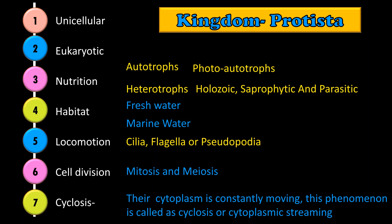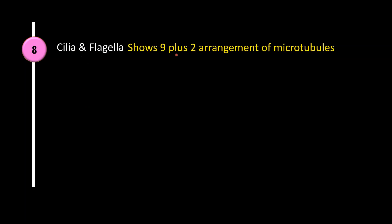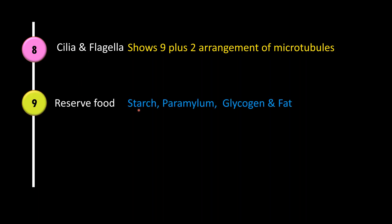Cyclosis helps in circulation of material inside the single cell. Flagella and cilia show a 9+2 arrangement of microtubules, that is 11 microtubules in total. They show reserved food as starch, paramylon, glycogen and fat.